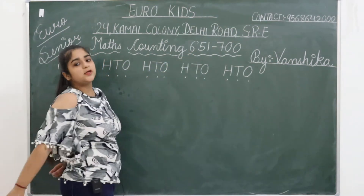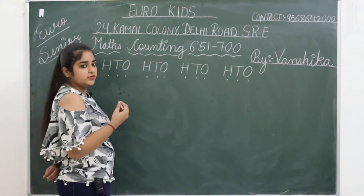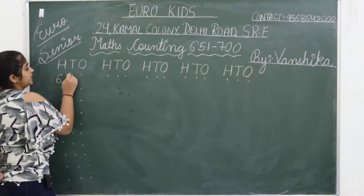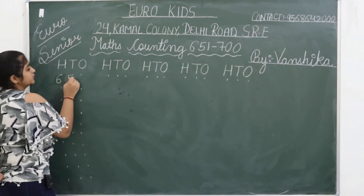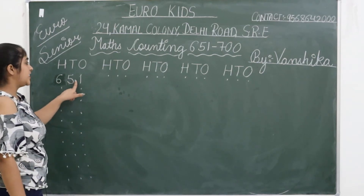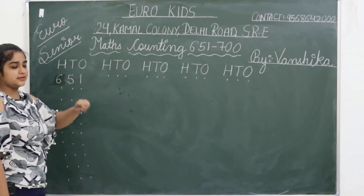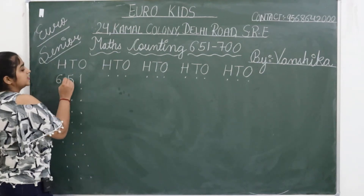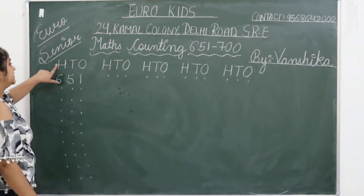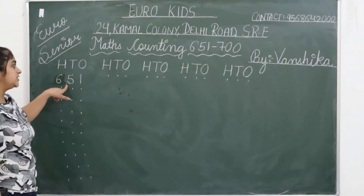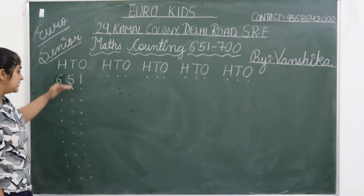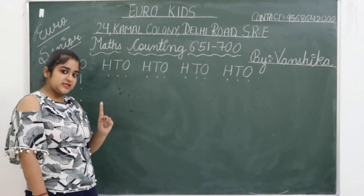We are going to start from 651. 651 — how do you write it? You will write it down as H, T, O. 651. Don't let lines mismatch. Okay?